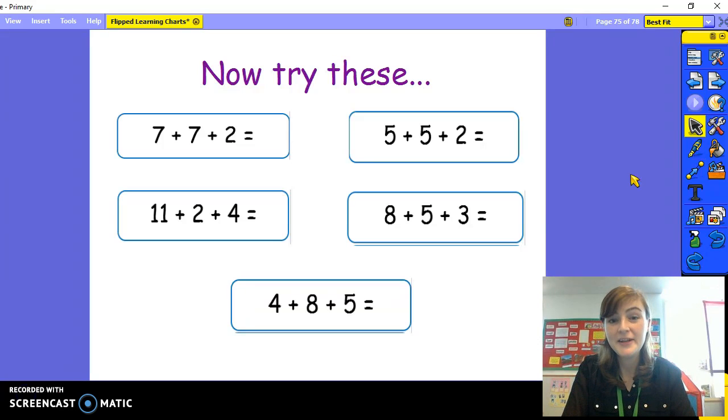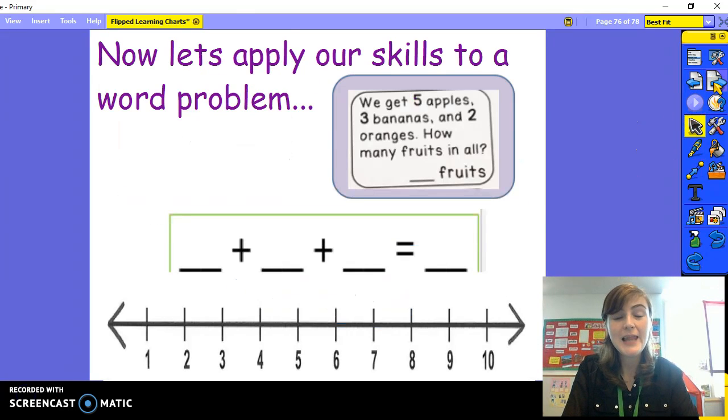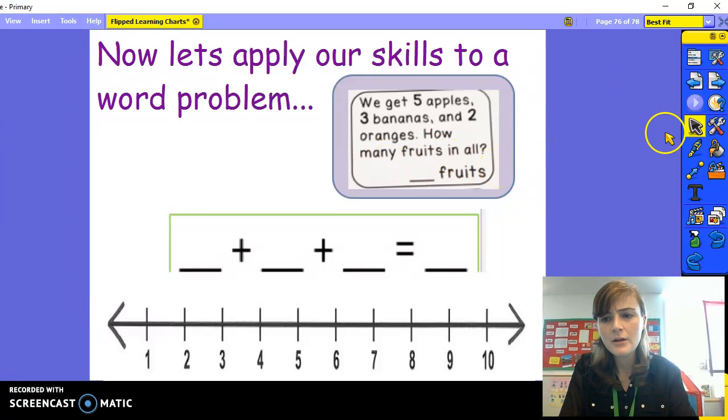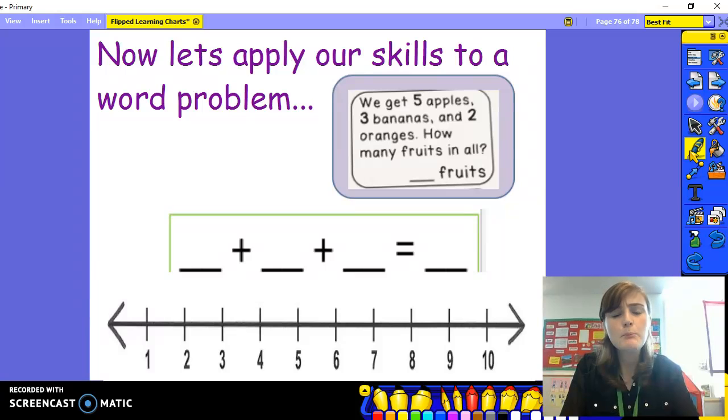Well done. Now let's try something a little trickier. Let's apply our skills to solve a word problem. We get five apples, three bananas, and two oranges. How many fruits in all? First, we have to find the important information in the word problem so that we can make a number sentence that we can solve. We get five apples. That must be group number one.